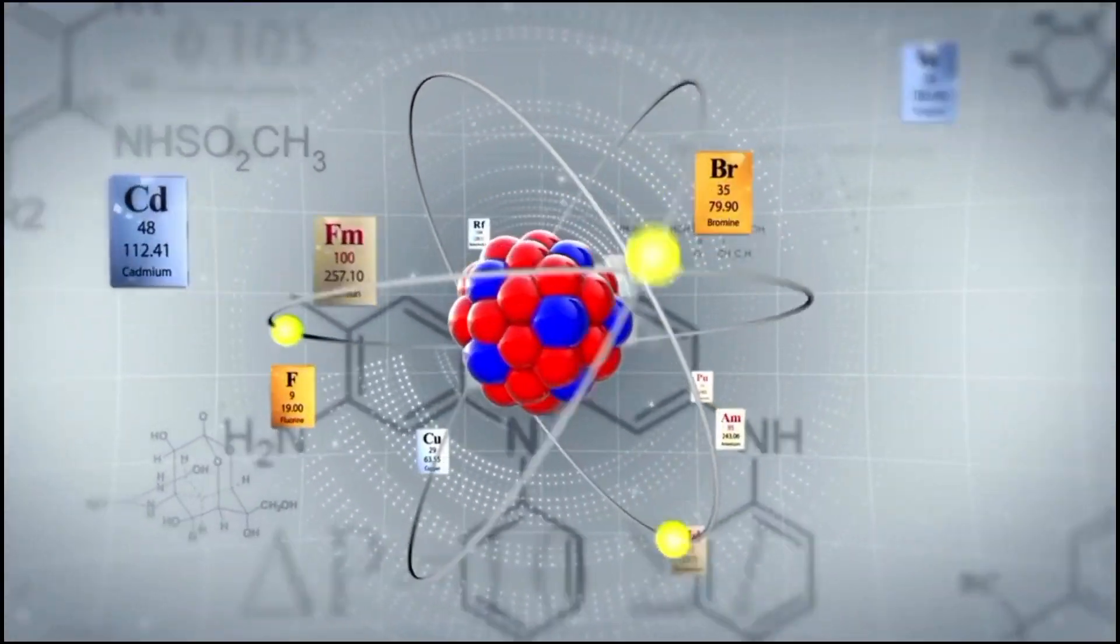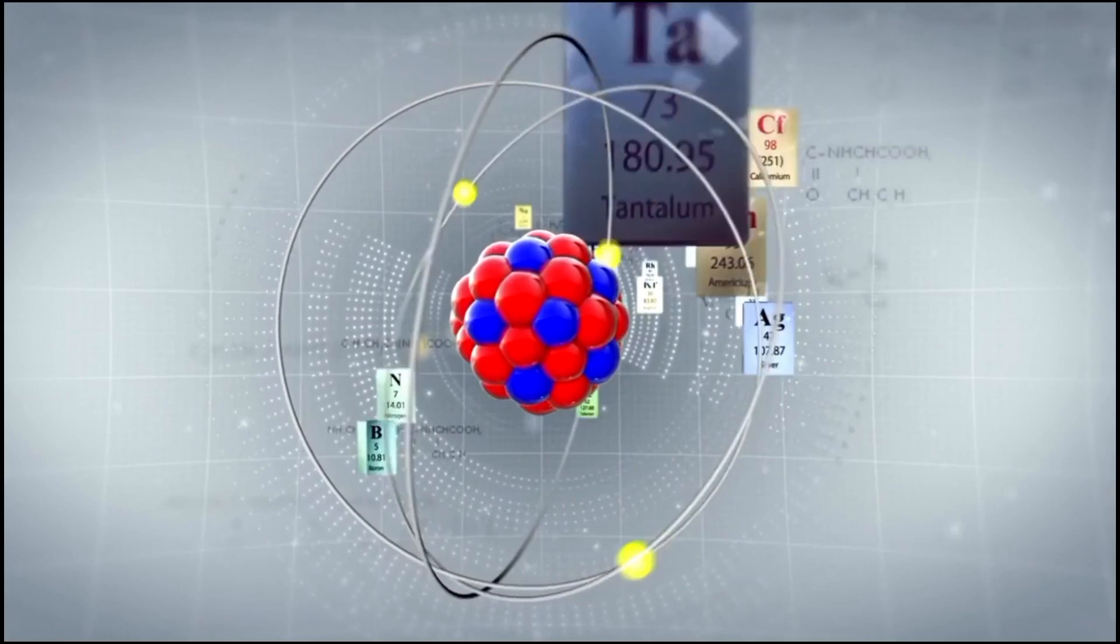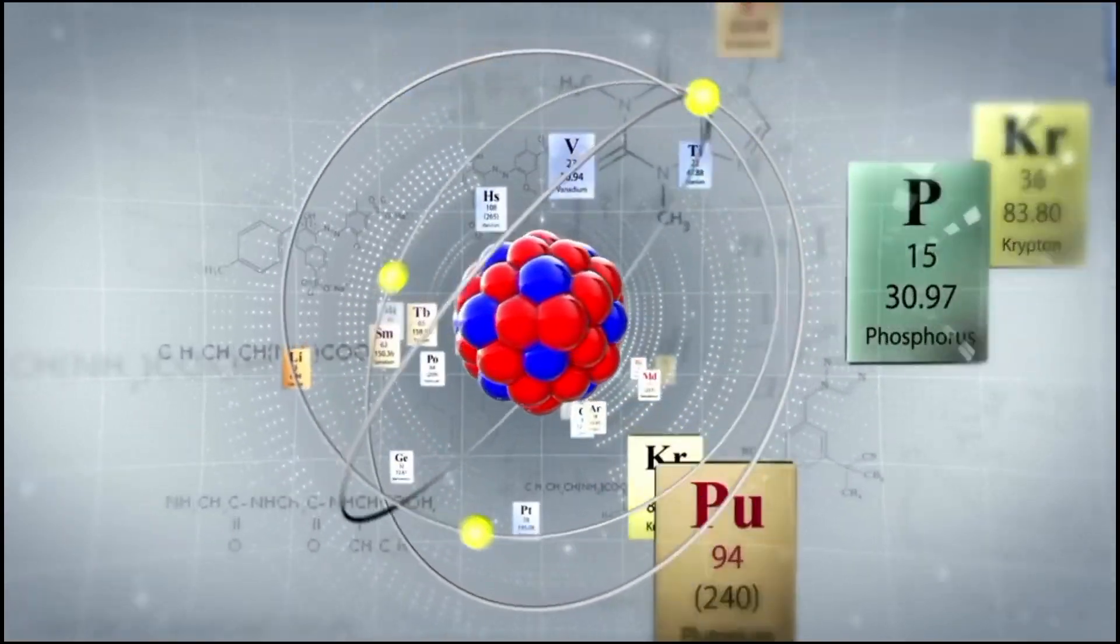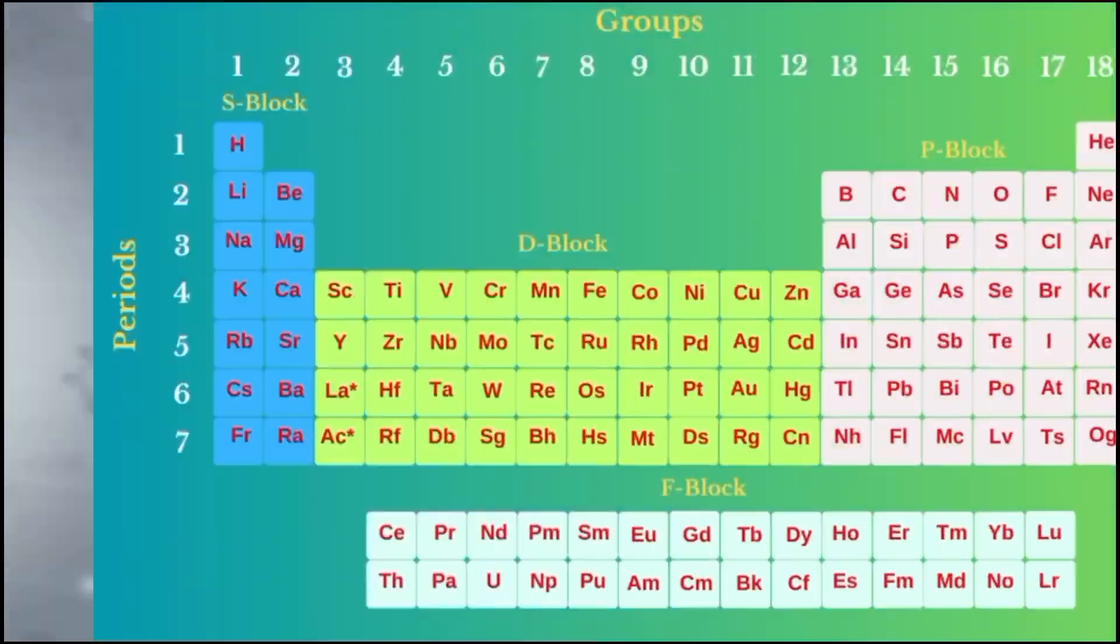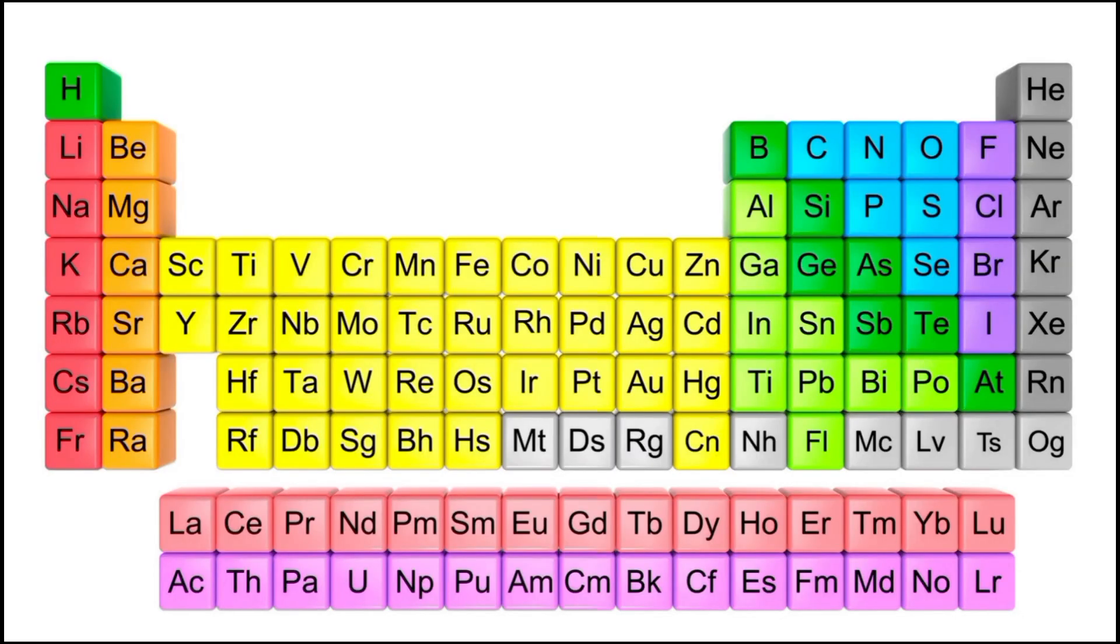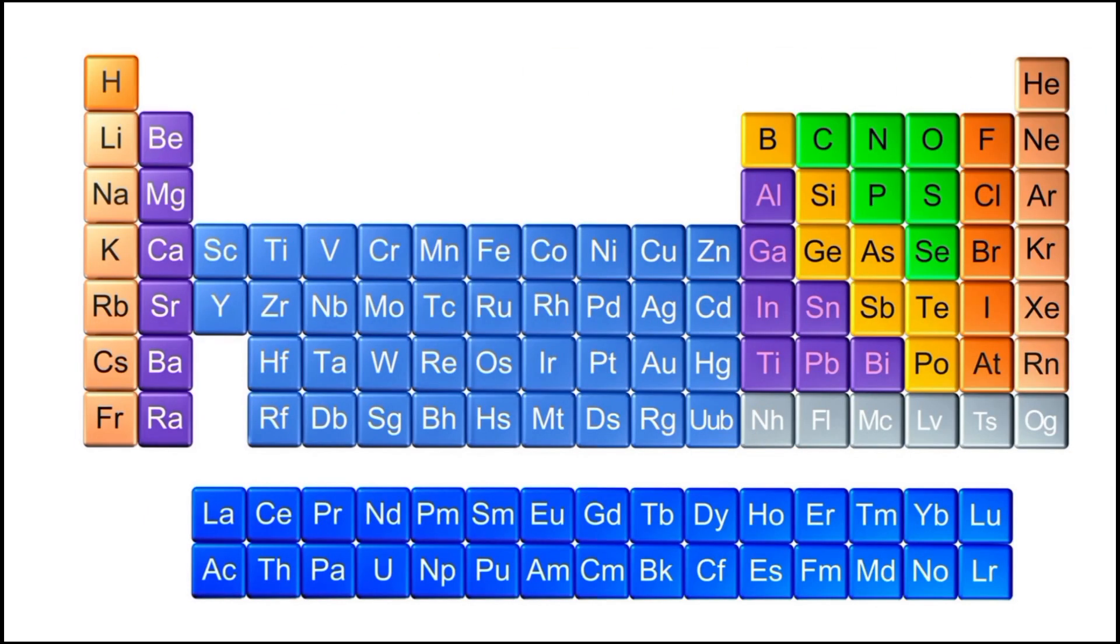Dmitri Mendeleev, a Russian chemist, is often credited with the initial organization of elements in the late 19th century. Mendeleev noticed that when elements were arranged by increasing atomic mass, patterns emerged in their properties and reactivity. He arranged the elements into rows and columns, leaving gaps for undiscovered elements yet to be identified. This allowed him to predict the properties of these missing elements.